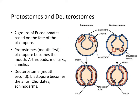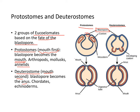Protostomes and deuterostomes are two groups of eucoelomates based on the fate of the blastopore. In protostomes — mouth first — the blastopore becomes the mouth. These include arthropods, mollusks, and annelids. In deuterostomes — mouth second — the blastopore becomes the anus first. These include chordates and echinoderms. The blastopore opening becomes the mouth first in protostomes, and the anus first in deuterostomes.